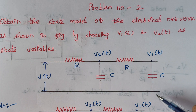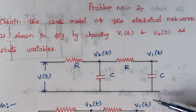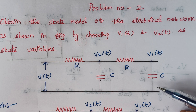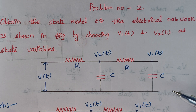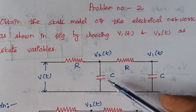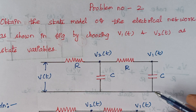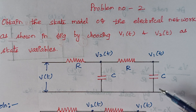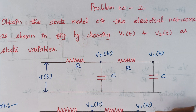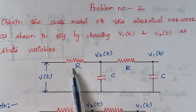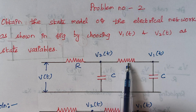This is our given circuit diagram. In this circuit diagram, we are having two energy storage elements — this capacitor and again this capacitor. The output voltage will be found across the two resistors, this resistor R and this resistor R.